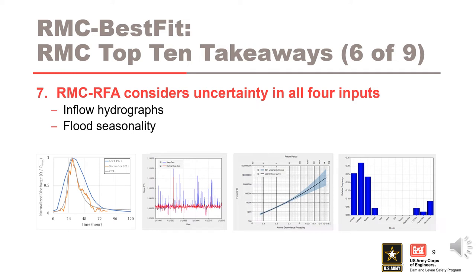Number seven is that RMC RFA considers uncertainty in all four inputs: inflow hydrograph shapes, reservoir starting stage, volume frequency, and flood seasonality. It is important to understand the quality and quantity of inflow hydrographs needed for the analysis, and to make sure to adjust the parameters so you have 30 to 40 flood events when computing flood seasonality.